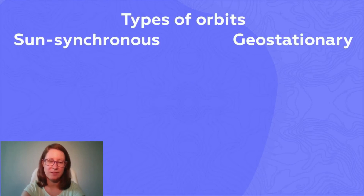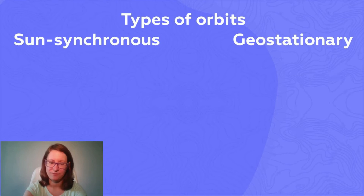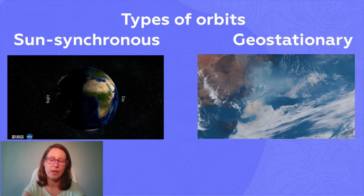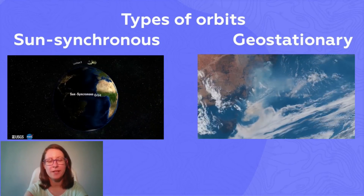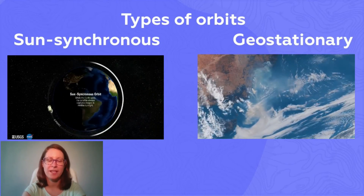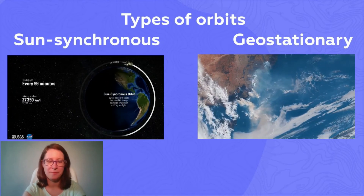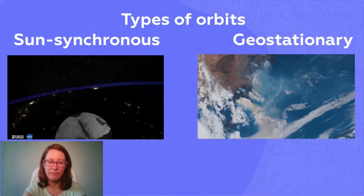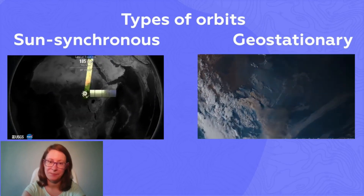There are two major ways how satellites orbit the Earth: sun-synchronous and geostationary. Sun-synchronous orbit is where a satellite passes over the same part of the Earth at the same time of the day. Those are usually low orbits.